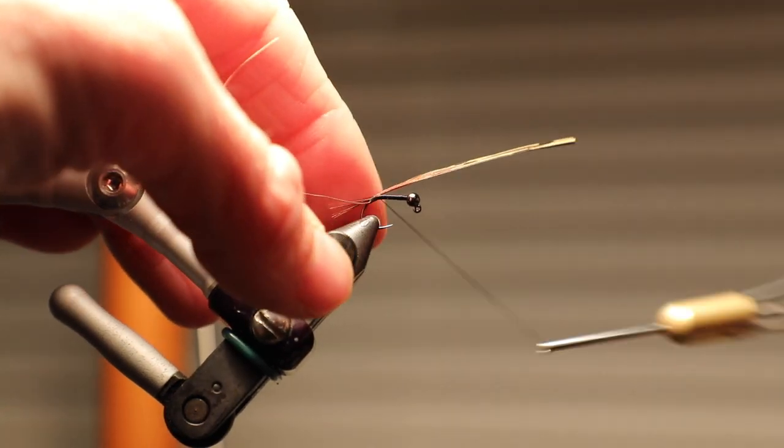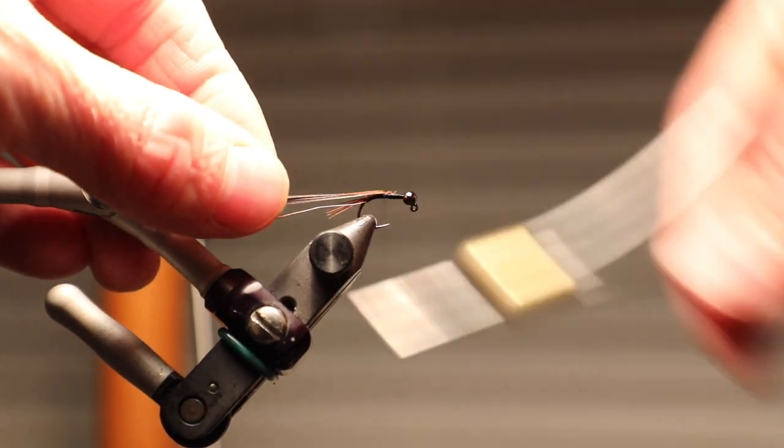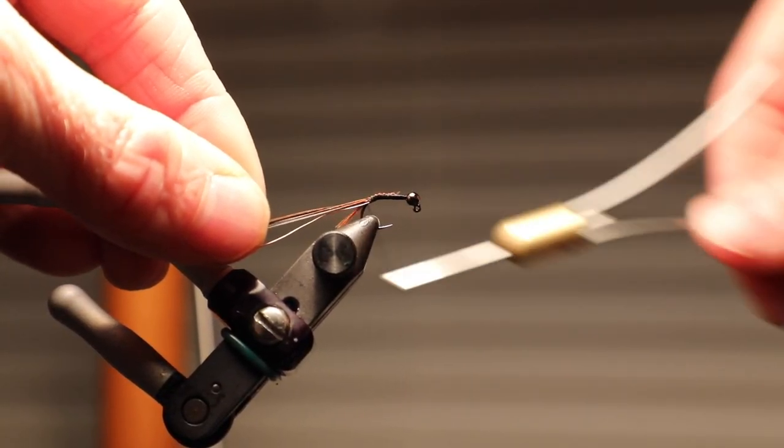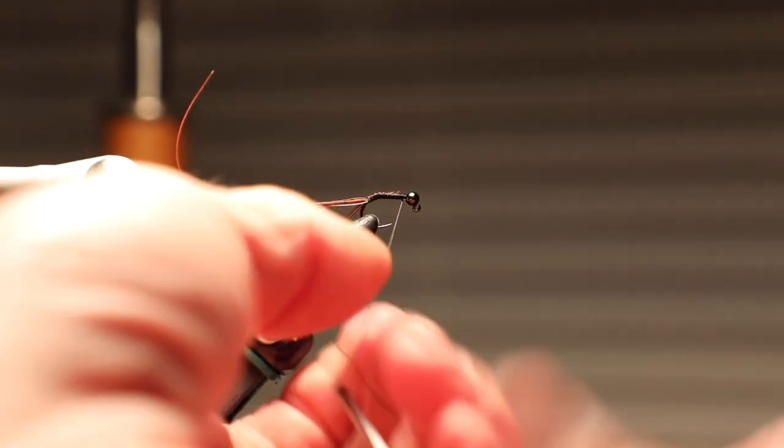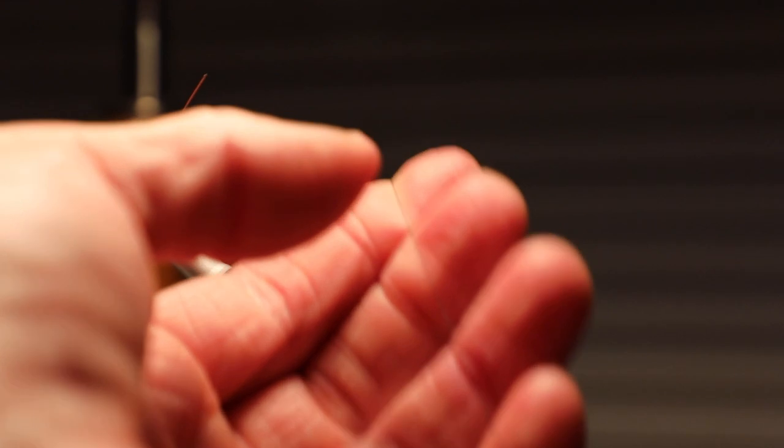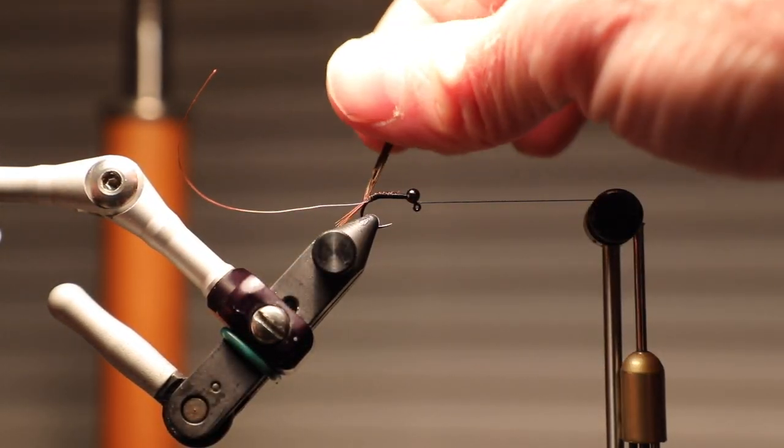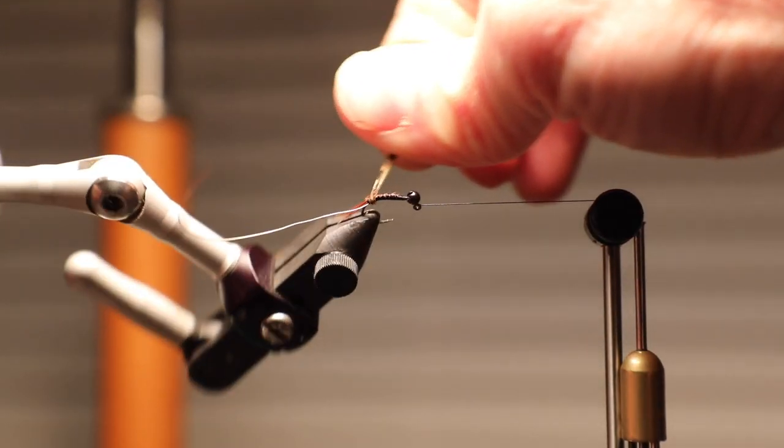And I'm gonna just tie that almost to the front. Then I'm gonna double it back over on itself and come all the way back. This is just gonna make it a little more durable. And throw a half hitch in there. And I'll pull my bobbin cradle around and see if I can use that rotary feature on the vise to make things easier for myself.